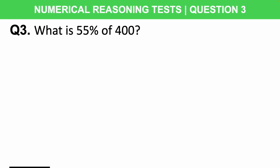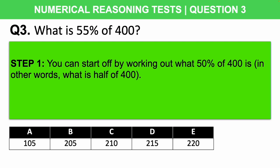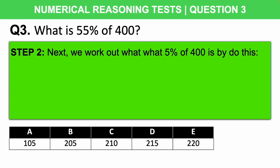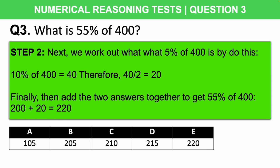To work out the answer, follow this simple strategy. Step 1: work out 50% of 400 — that's half of 400, which is 200. Next, work out 5% of 400 by first finding 10%: move the decimal place by 1, so 10% of 400 is 40. Then halve that: 40 divided by 2 is 20. Finally, add the two together: 200 plus 20 is 220, making the correct answer E.